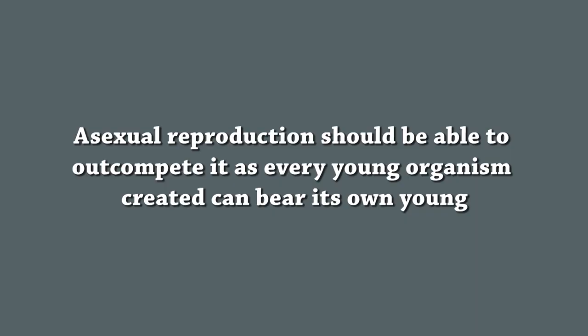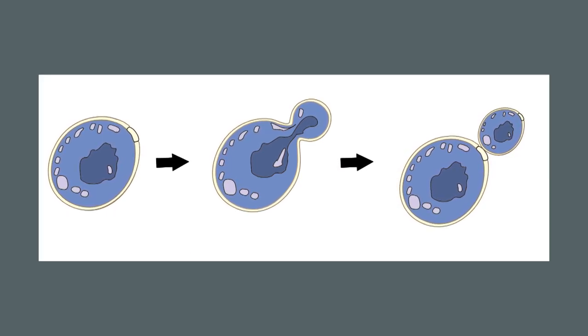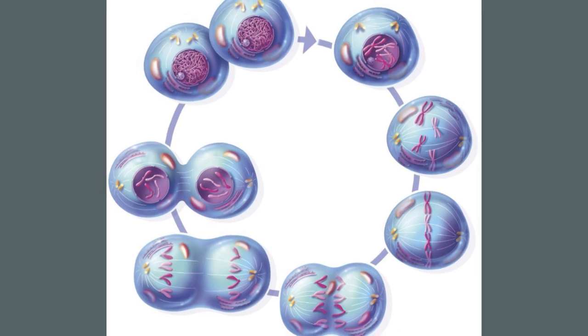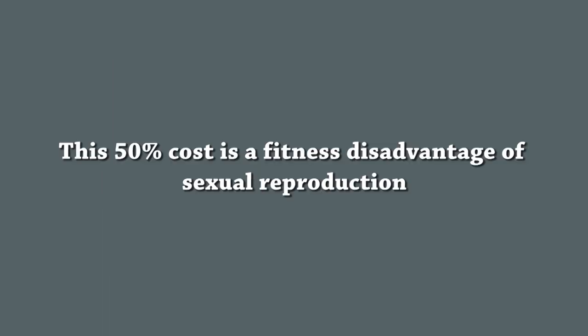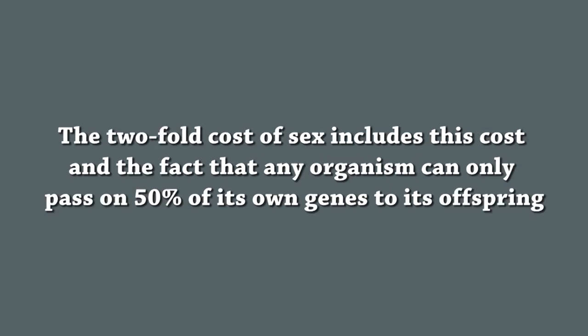The evolution of sexual reproduction is a major puzzle because asexual reproduction should be able to outcompete it, as every organism created can bear its own offspring. This implies that an asexual population has an intrinsic capacity to grow more rapidly with each generation, resulting in a geometric increase of population. This 50% cost is a fitness disadvantage of sexual reproduction.